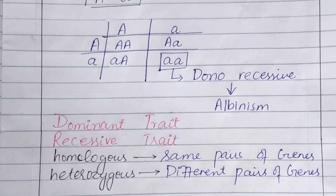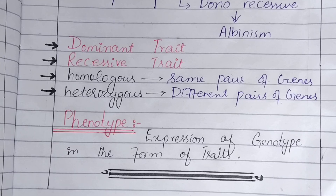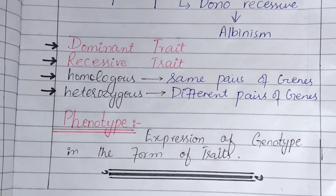The next term is phenotype. Phenotype is the expression of genotypes in the form of traits. The traits that show in any individual are specific combinations of genetic formation — these are genotypes, but we don't directly observe them.